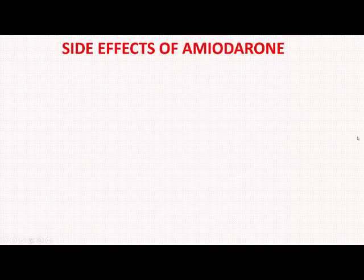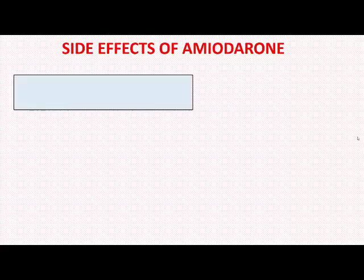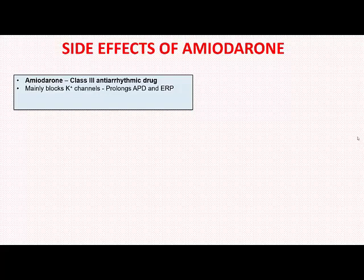Today we will talk about the side effects of amiodarone. Before we talk about the side effects, let us briefly go through some important features. Amiodarone is a class 3 antiarrhythmic drug. The most important property of class 3 antiarrhythmic drugs is that they are potassium channel blockers, so their main effect is to prolong action potential duration and effective refractory period.